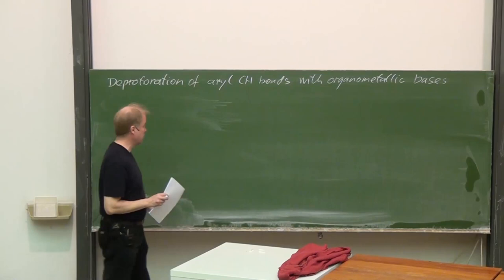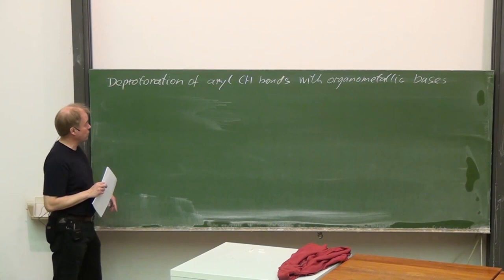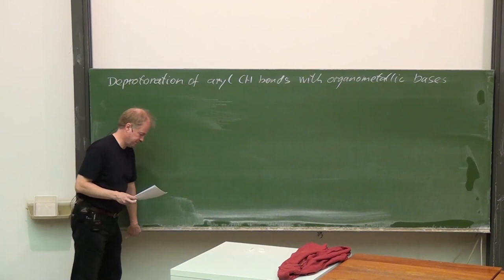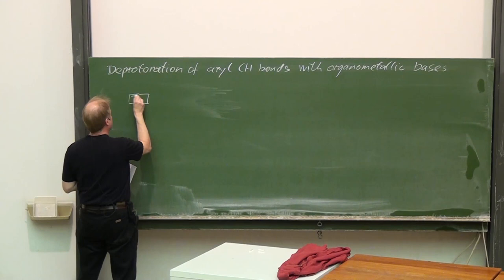Welcome to the fifth part of the lecture on stoichiometric organometallics. The subject of today is the deprotonation of aryl C-H bonds with organometallic bases. The prototype of an aromatic system is, of course, benzene.